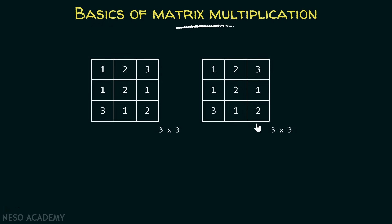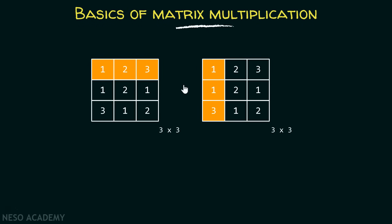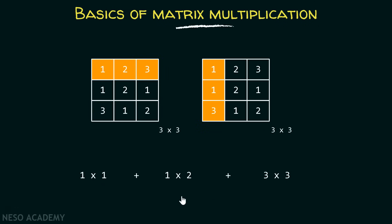In order to obtain the first element of the resultant matrix, we will take the first row from this matrix and the first column from this matrix. Then we will take the first element from this row and the first element from this column and multiply them. Then we will take the second element from this row and the second element from this column and multiply them. Then we will take the third element from this row and the third element from this column and multiply them. Finally, we will add them all to obtain the final result.